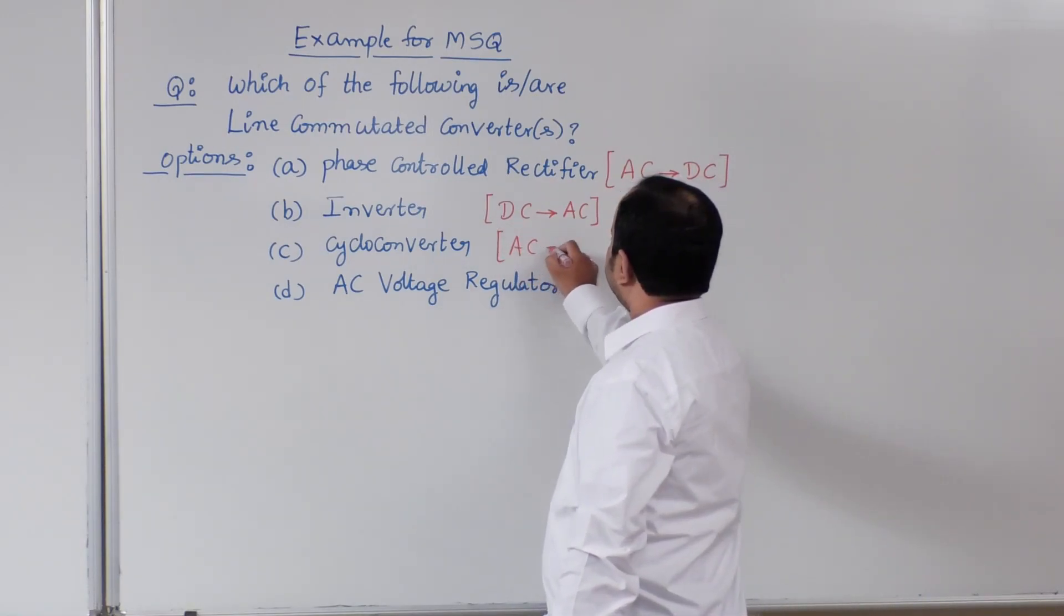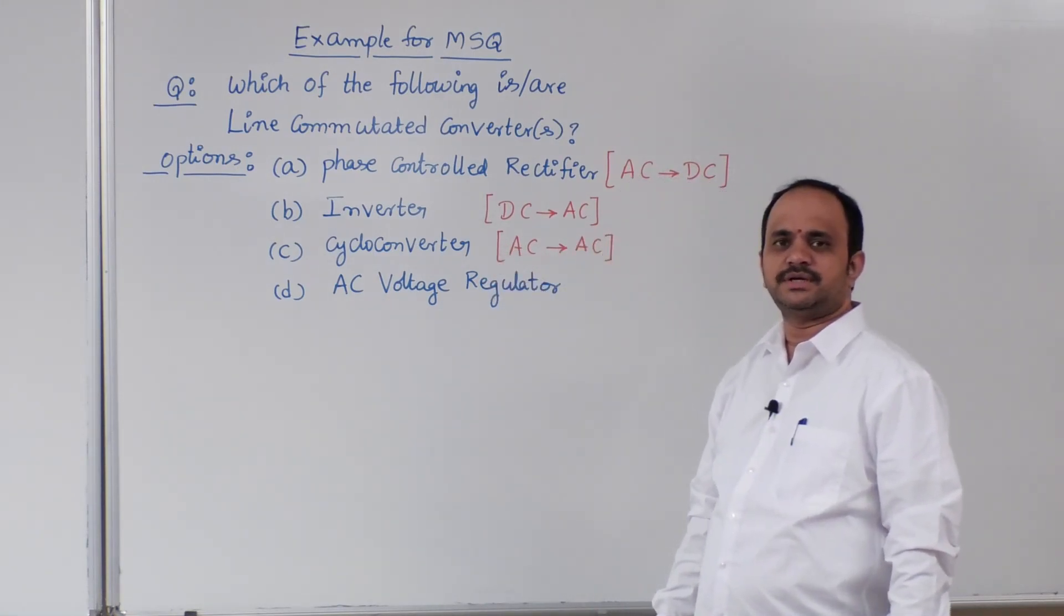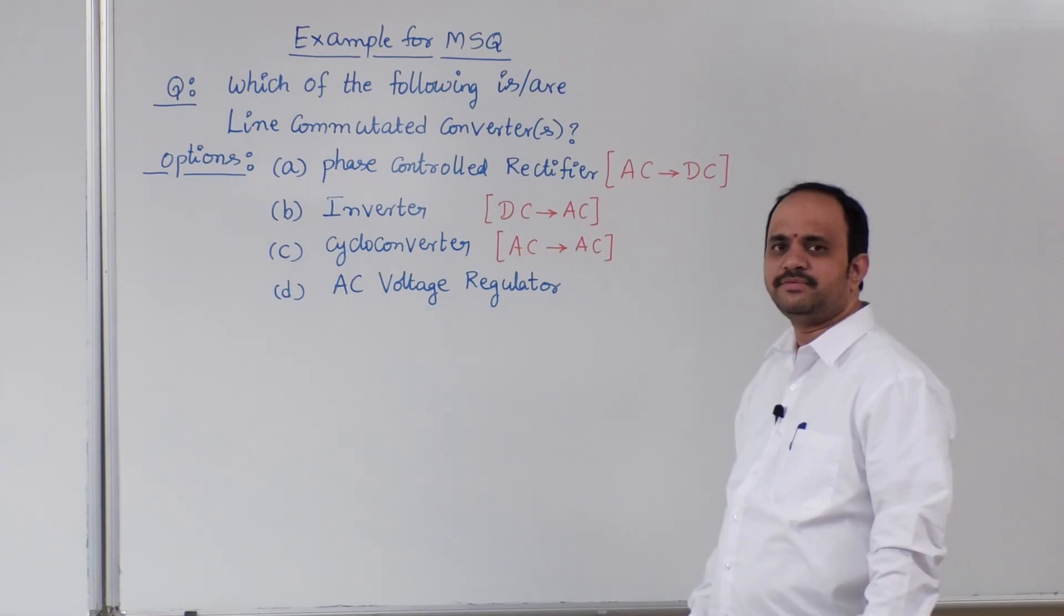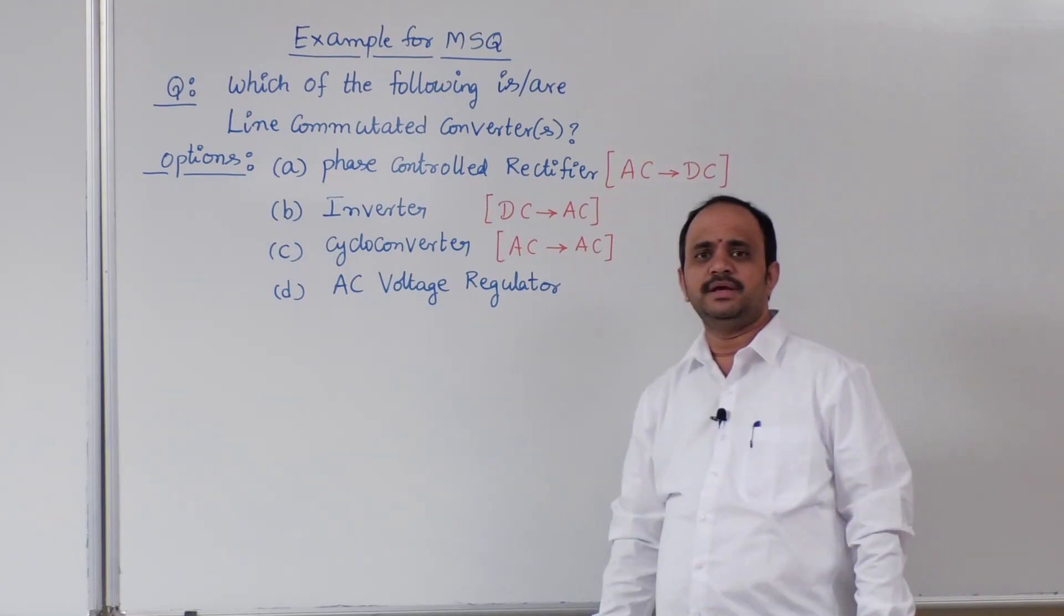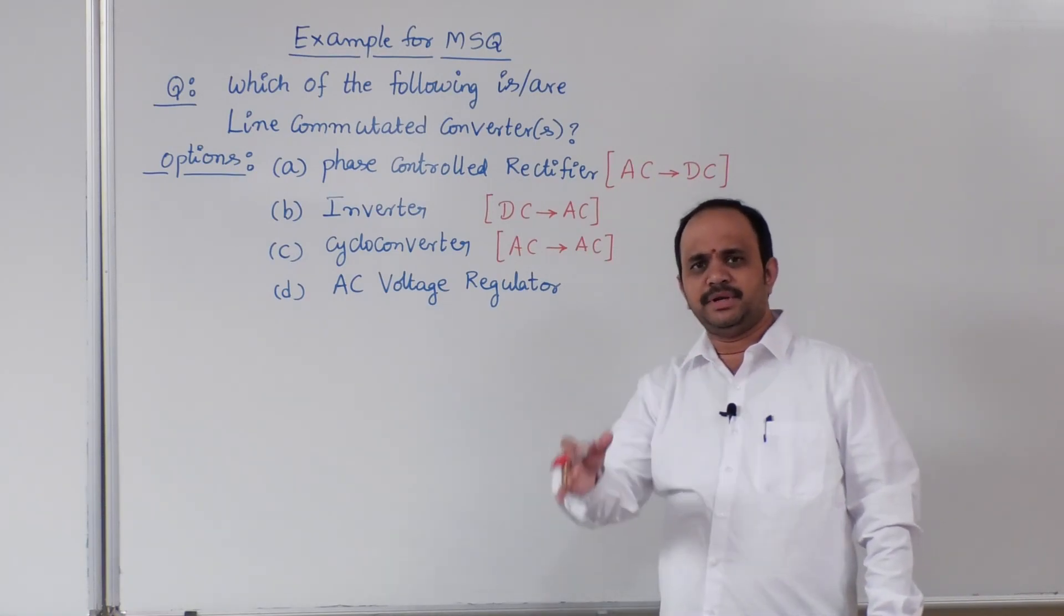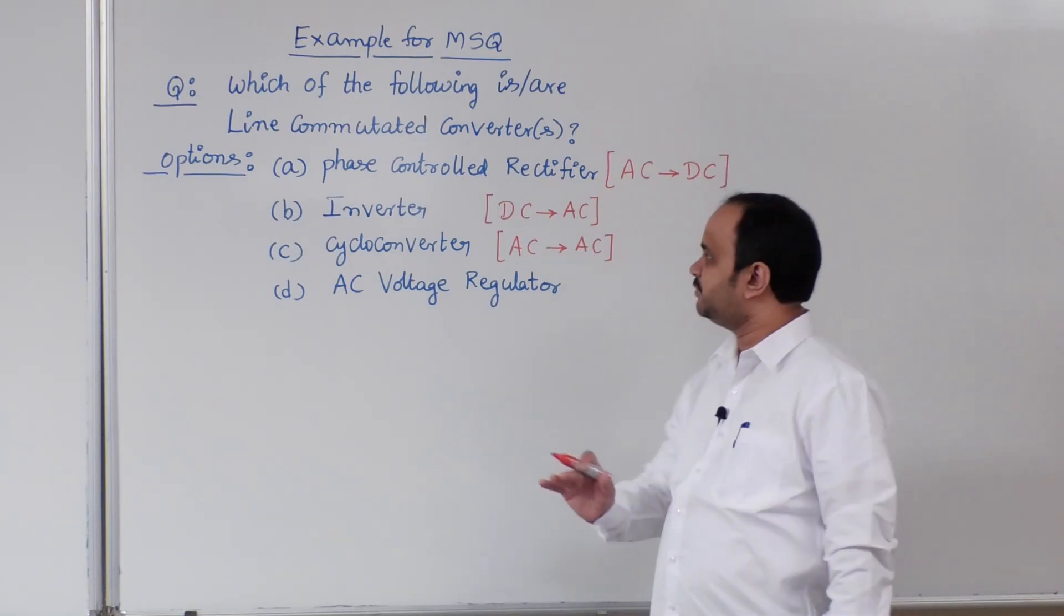Cycloconverter, AC to AC converter, especially it is used for frequency control. Output is variable frequency. It can be either stepping down or stepping up the frequency.